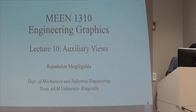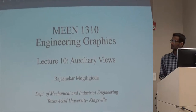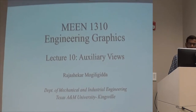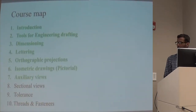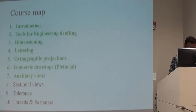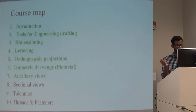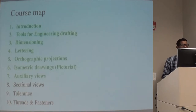Today I will be starting on a new topic which are auxiliary views. These are used when the normal orthographic views will not give all the details about a particular 3D model. That's when we will be using auxiliary views as a secondary view in order to explain the complex geometry about a 3D part.